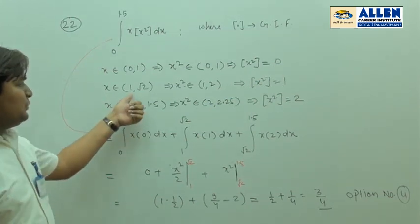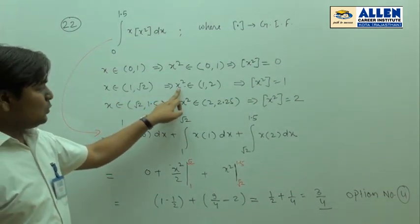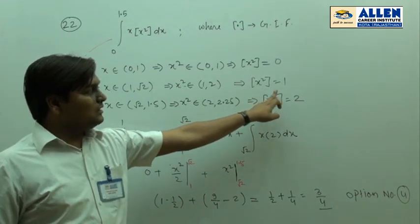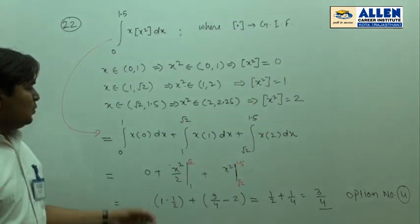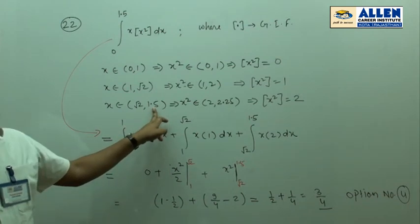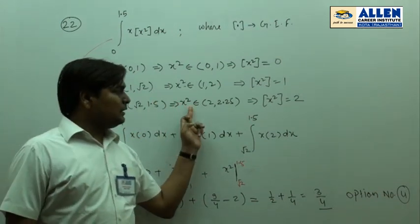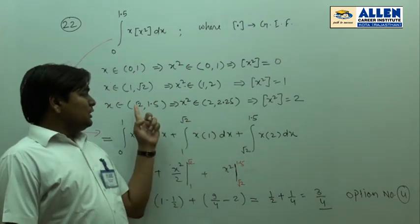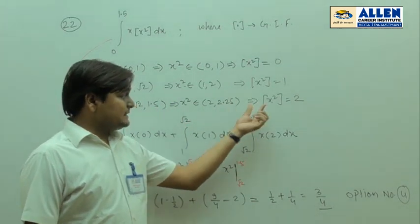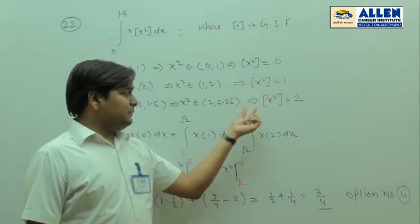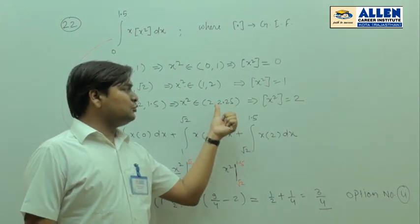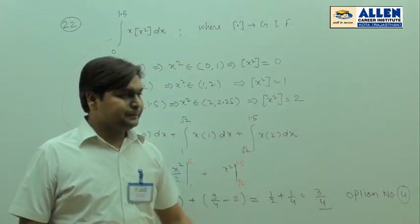When x is from 1 to √2, then x² belongs to [1, 2] and ⌊x²⌋ = 1. When x is from √2 to 1.5, then x² belongs to [2, 2.25] and ⌊x²⌋ = 2.